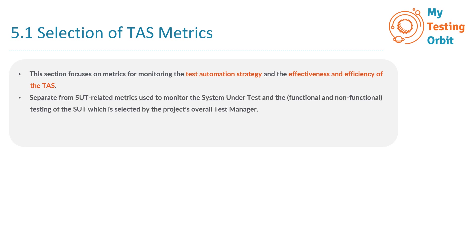These automation metrics are separate from SUT-related metrics, which are used to monitor the system under test and its functional and non-functional testing, and are selected by the project's overall test manager. The SUT-related metrics monitor the SUT — that is, the software or application being tested — along with its functional and non-functional aspects, and the responsibility for selecting and managing these metrics lies with the project's overall test manager.